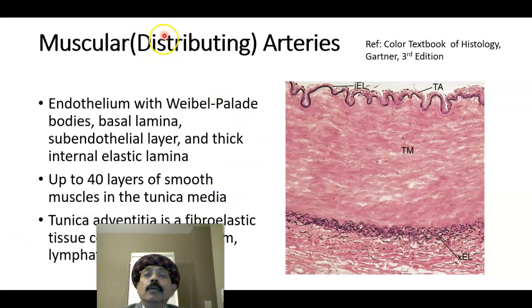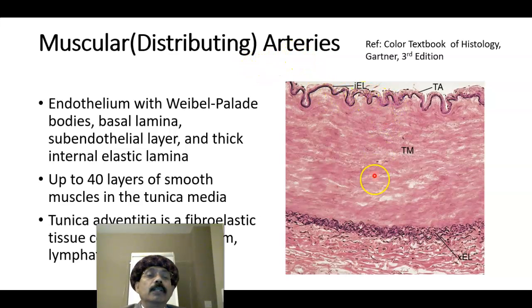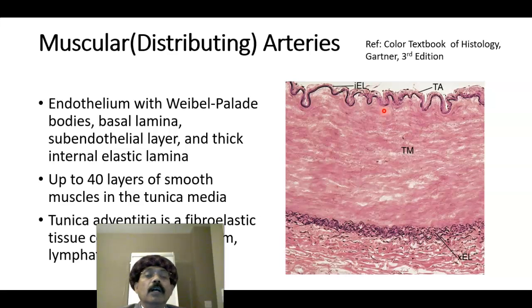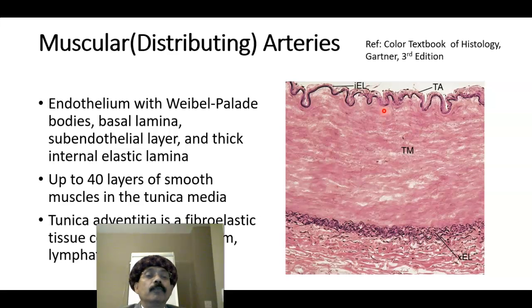Here we are looking at another slide of muscular arteries. Remember that muscular arteries are the most numerous arteries — examples include the brachial artery, radial artery, ulnar artery, popliteal artery, and femoral artery. As a rule, they may contain up to 40 layers of smooth muscle in the tunica media.